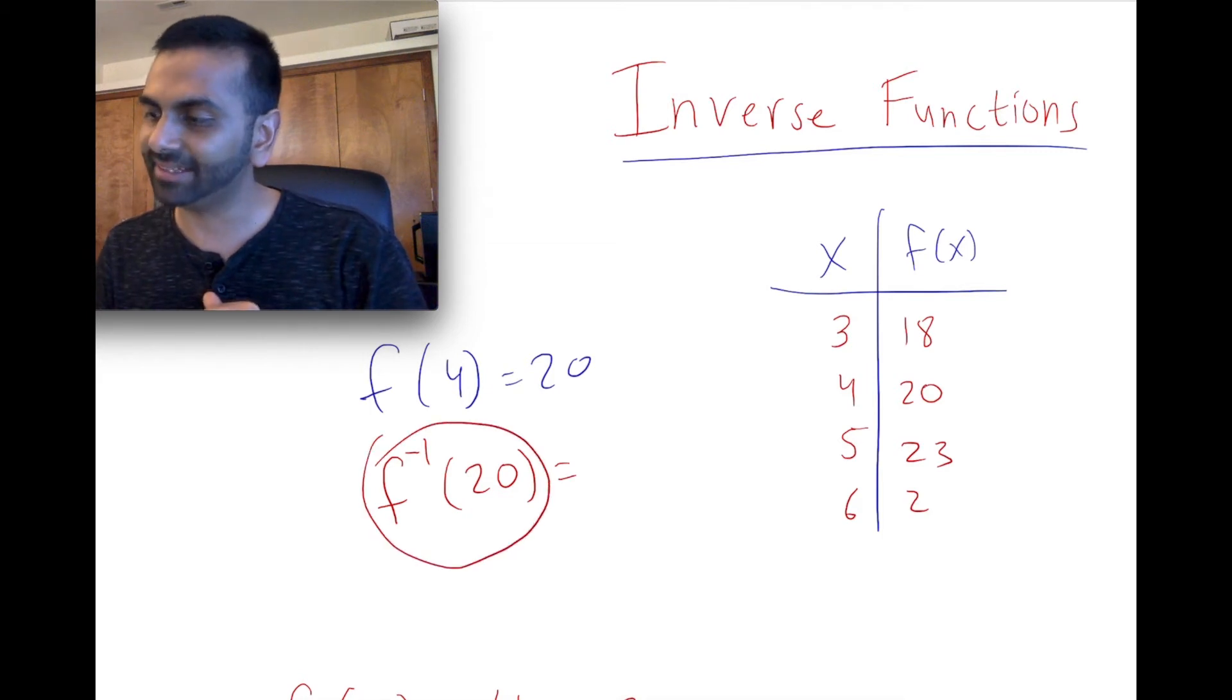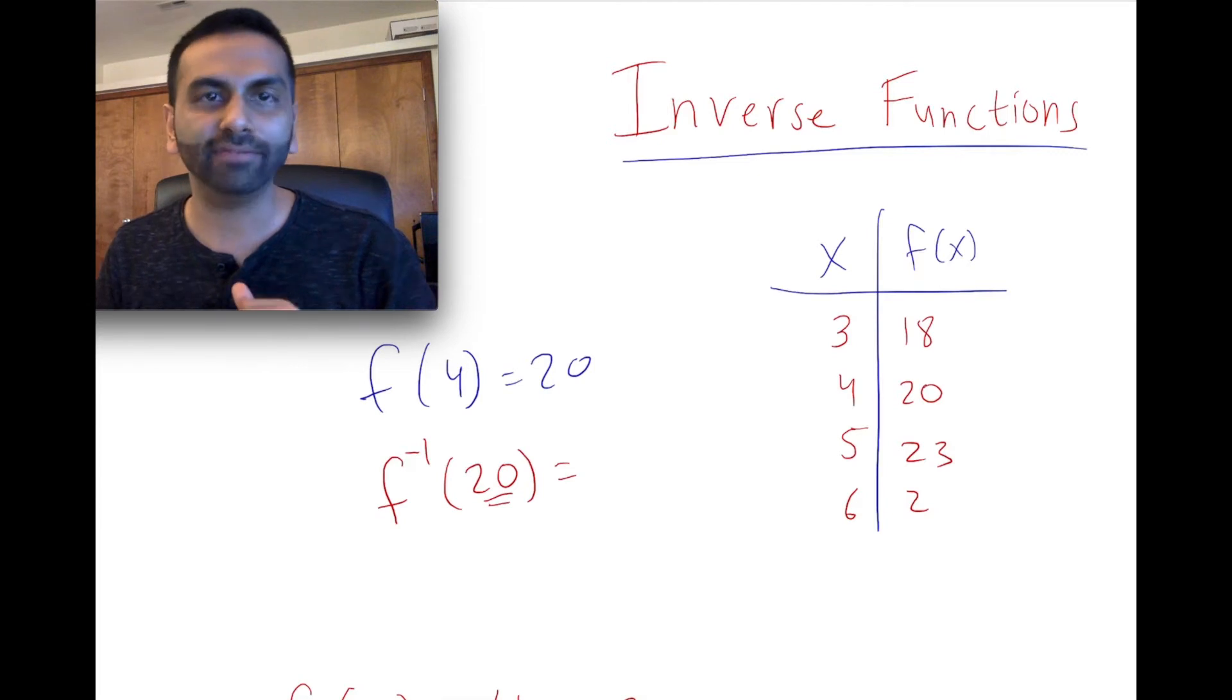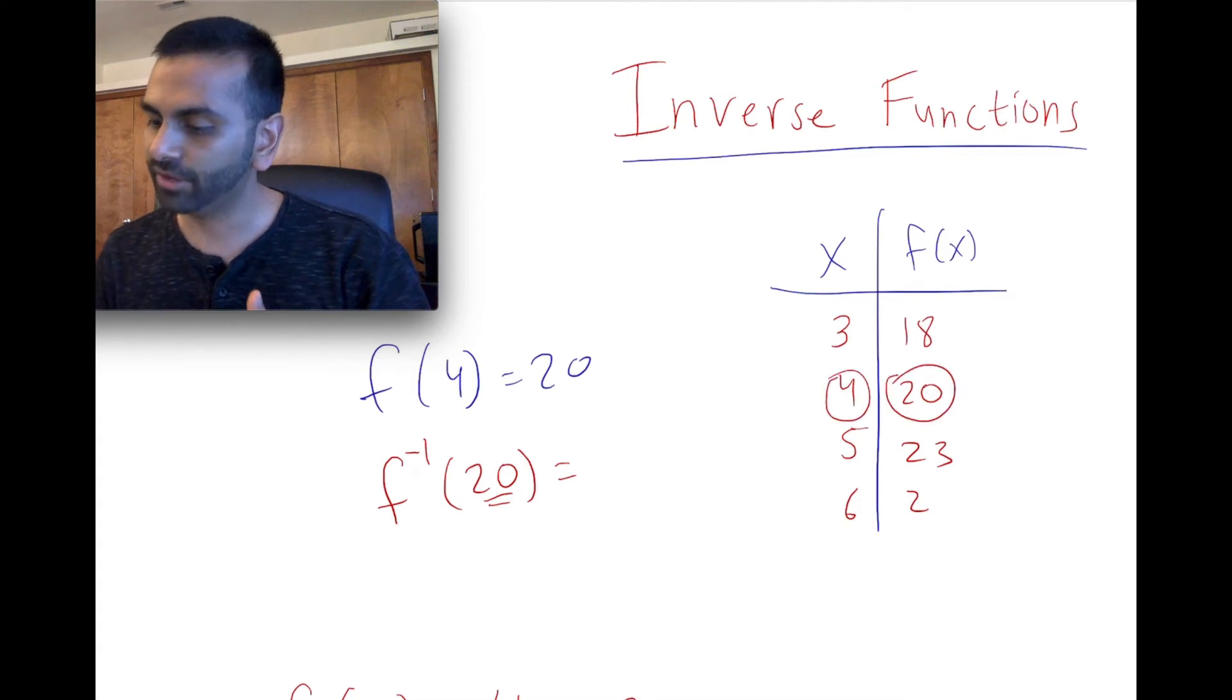So f inverse of 20, it's asking a different question. It's now asking, when your output, when your y variable is 20, what's your x? What's your input variable? So here, when your output is 20, your input was 4. So f inverse of 20 is 4.